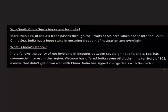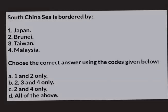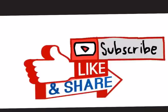So this was in brief all about the dispute surrounding the South China Sea. If you missed out anything, please mention it in the comment box below. Based on today's discussion, try to solve a question from a prelims perspective: 'South China Sea is bordered by: 1. Japan, 2. Brunei, 3. Taiwan, and 4. Malaysia — choose the correct answer.' You can comment your answers in the comment section below. Please don't forget to like and share this video. Thank you.